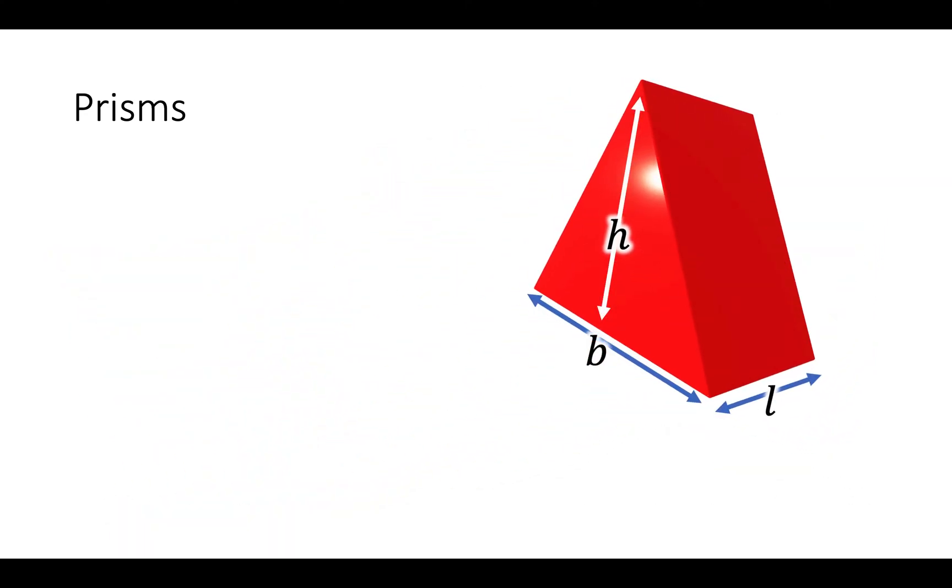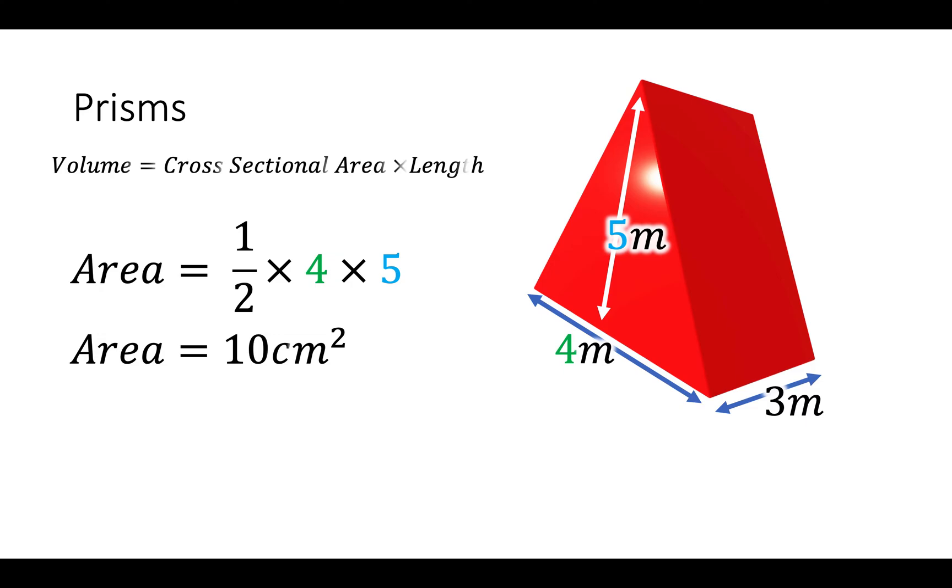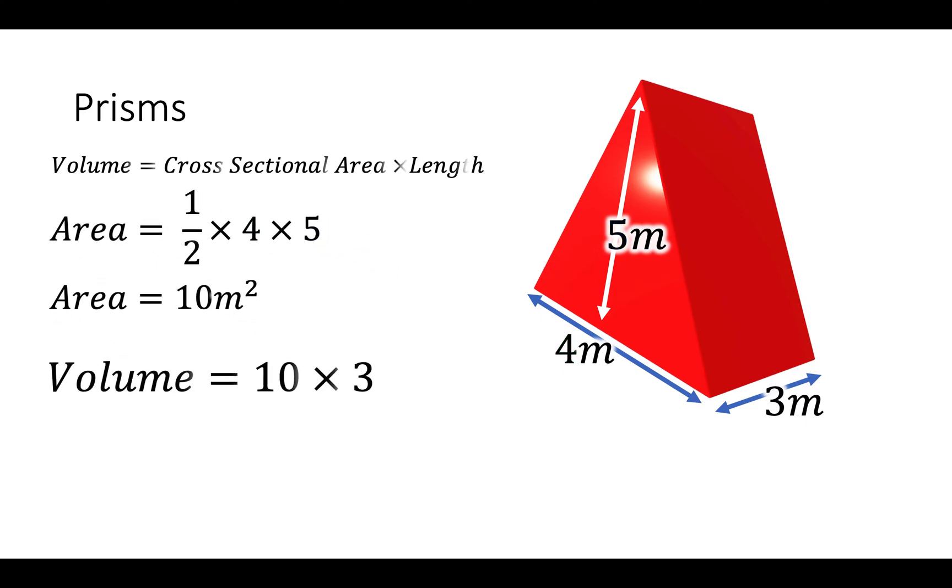Let's do an example where we're working out the volume of a triangular prism. So the volume is given by cross-sectional area times length, and we're going to work out the cross-sectional area first. That's the base times the height. So we're working out the area of this triangle here. The base is 4m, the height is 5m, so we put those numbers into the equation. 4 times 5 is 20, times a half is 10, the area is 10cm squared. We then multiply that by 3 because the length of the prism is 3. So the volume is 10 times 3, 30m cubed. Again, remember the units.